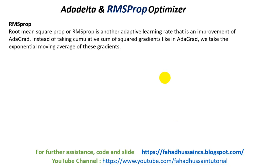In the previous session, we have seen the adaptive gradient optimizer and its working, the momentum we discussed earlier, and the stochastic gradient descent. We have discussed all these things. The recommendation is to cover all the sessions because until you understand those things, you can't understand properly. In today's session, we have two optimizer types: AdaDelta and RMSProp Optimizer.